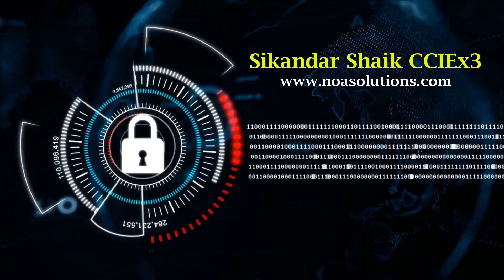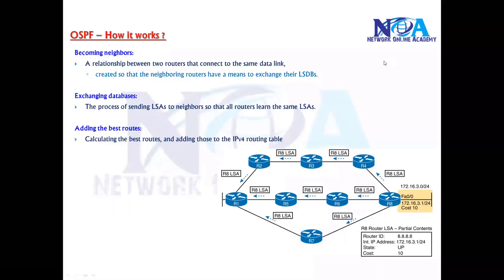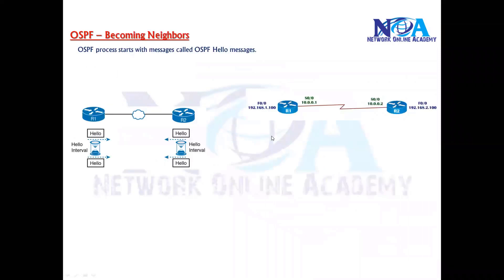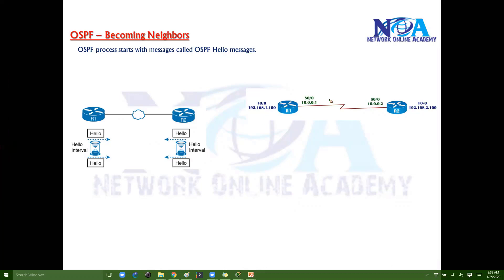Let's see how the OSPF neighbor becoming process exactly happens. The first step is the OSPF neighbor becoming process. Whenever you configure OSPF normally, the OSPF process will start with something called hello messages. By default, router 1 and router 2 - these are the two routers we have - are like strangers. They don't know anything about each other.